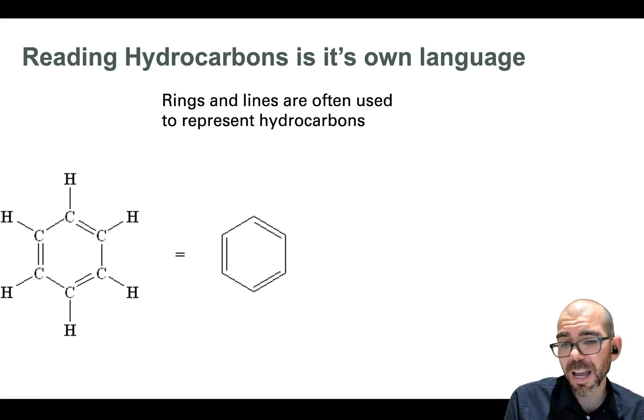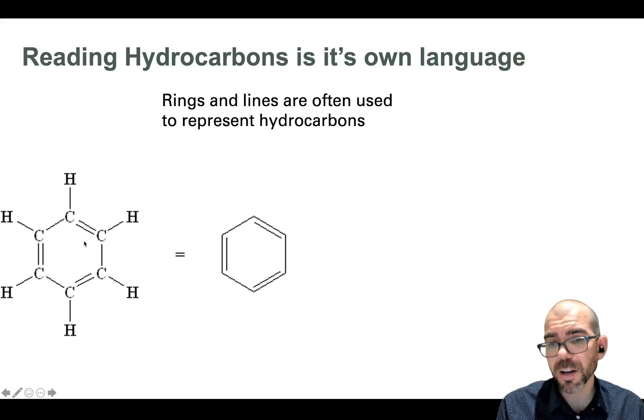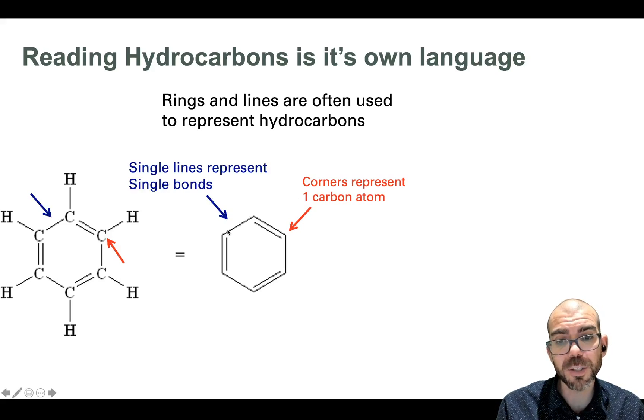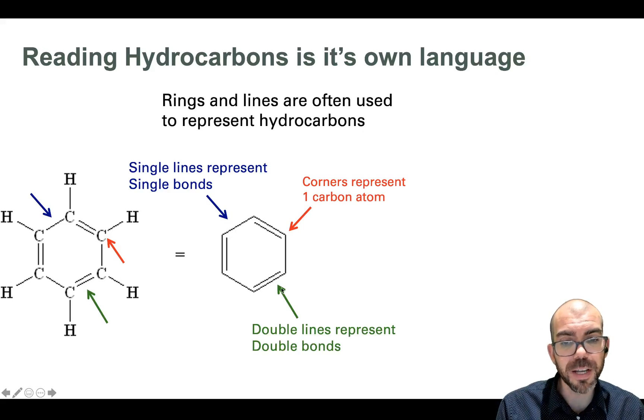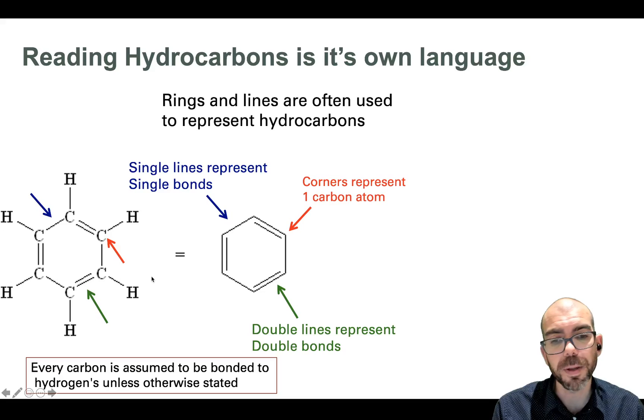Now when reading organic molecules, you're going to see some diagrams you're probably not familiar with. On the far left here, you can see what you probably saw in chemistry. We have sticks representing the bonds between atoms - here's a single bond, here's a double bond. Often in organic chemistry, that is omitted. You'll see something like this ring instead. Both of these pictures convey the same exact information, just in a different way. When looking at a diagram like this ring, each corner represents a carbon atom. The single lines represent single bonds and the double lines represent double bonds.